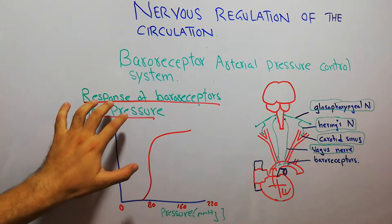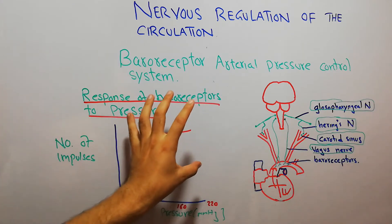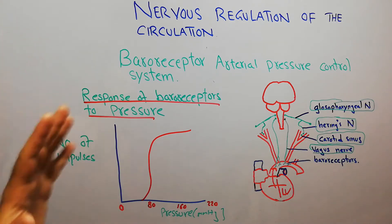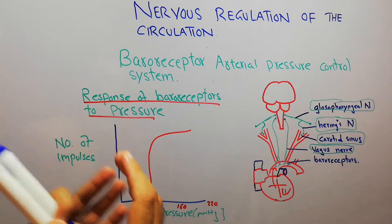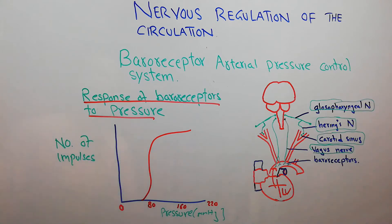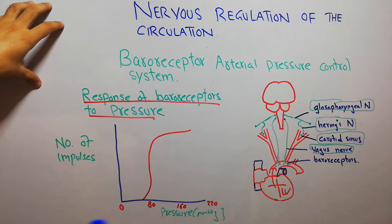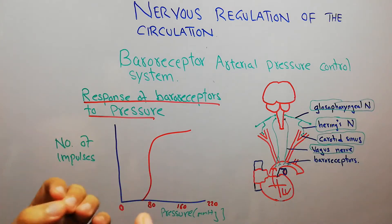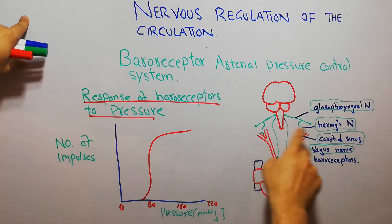In this lecture we are going to talk about the response of baroreceptors to pressure — how baroreceptors in the human body respond to increasing or decreasing arterial pressure. To summarize the last lecture: there are stretch receptors known as baroreceptors or pressoreceptors, located in most arteries of the thorax, but most commonly present in the aortic arch and at the bifurcation of the carotid arteries.